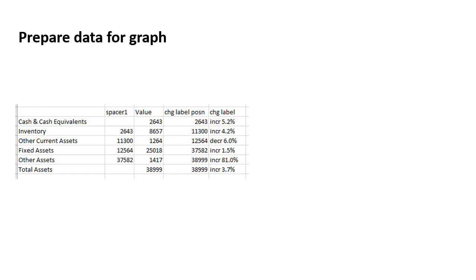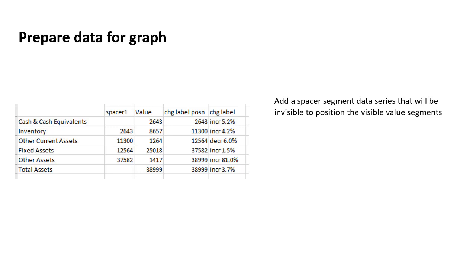Here's how we've set up the data. A few things to note: the very first data series is a spacer segment. The spacer segment allows the visible segments to be positioned where they need to be, because the spacer is going to be invisible. This is a stacked column graph, and the spacer positions the visible segments where we want them.